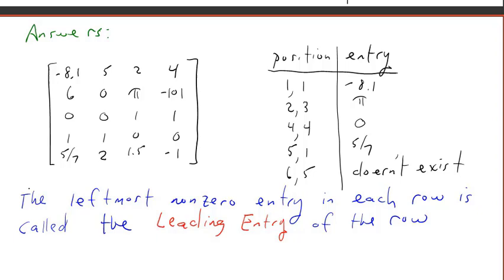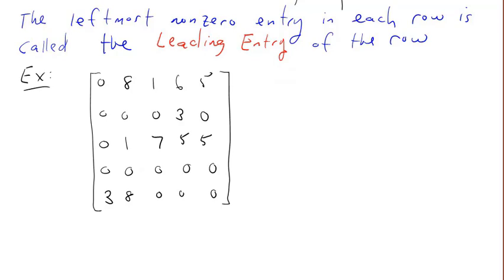The leftmost non-zero entry in each row is called the leading entry of the row. For example, the leading entry of the first row is this 8, the leftmost non-zero entry. Second row, it's the 3. Third row is the 1. Fourth row, there is no non-zero entry, so there is no leading entry. The fifth row, simply that 3.